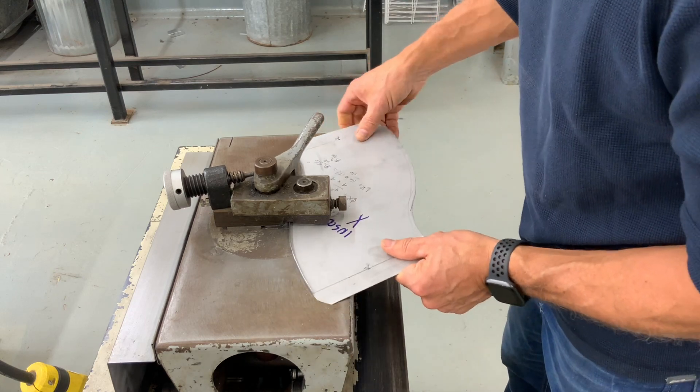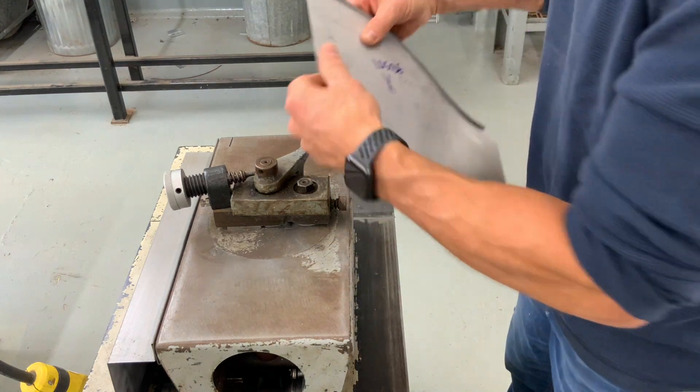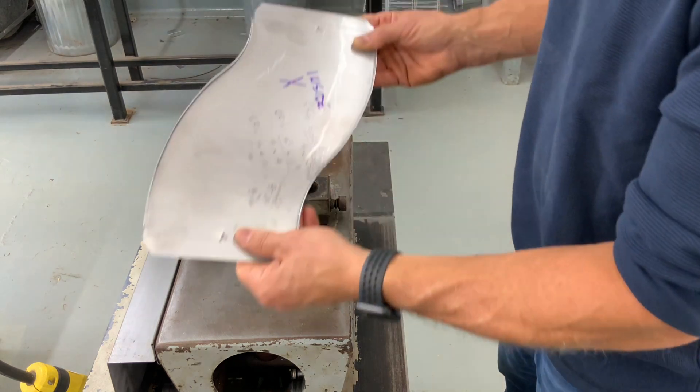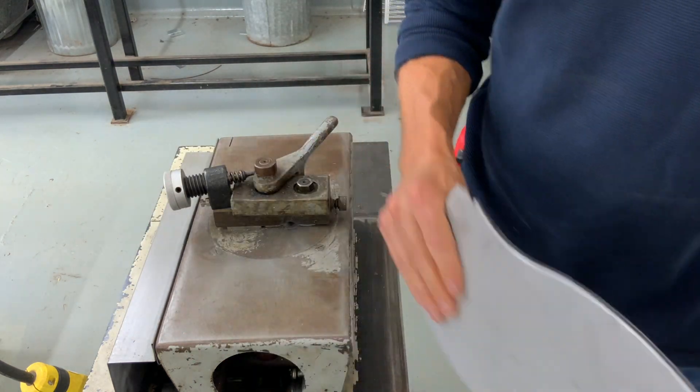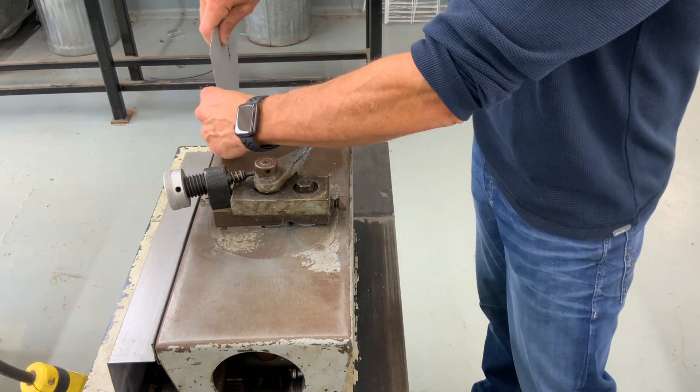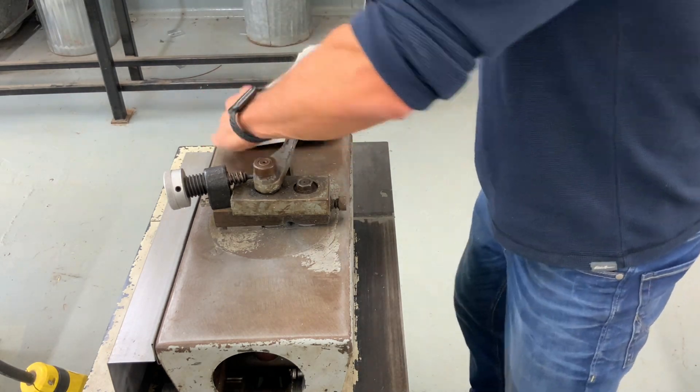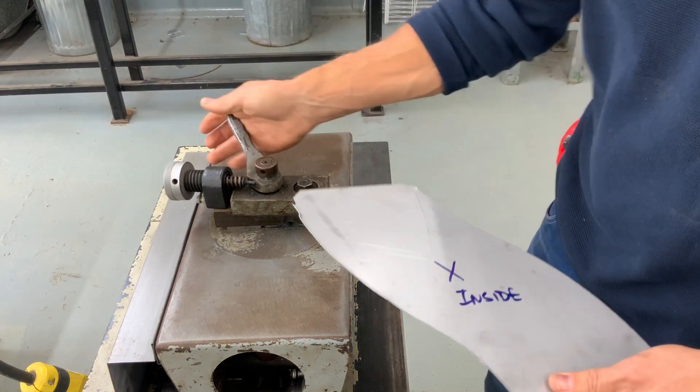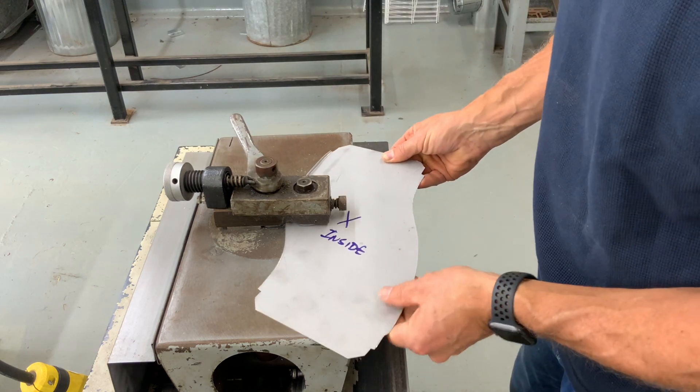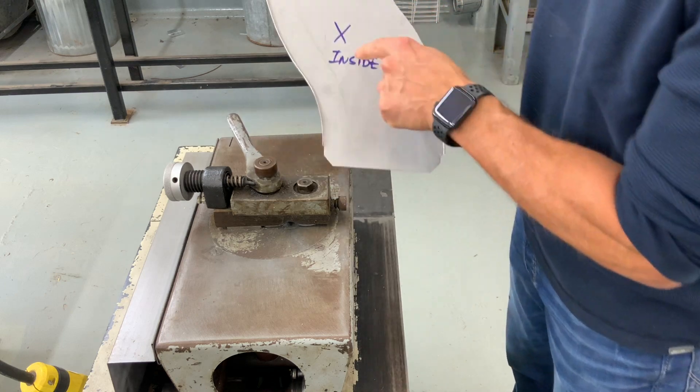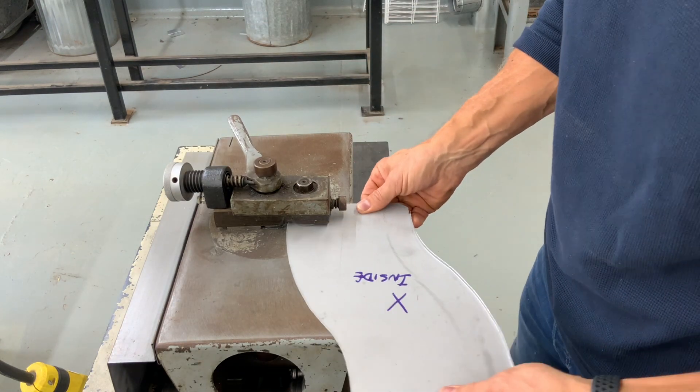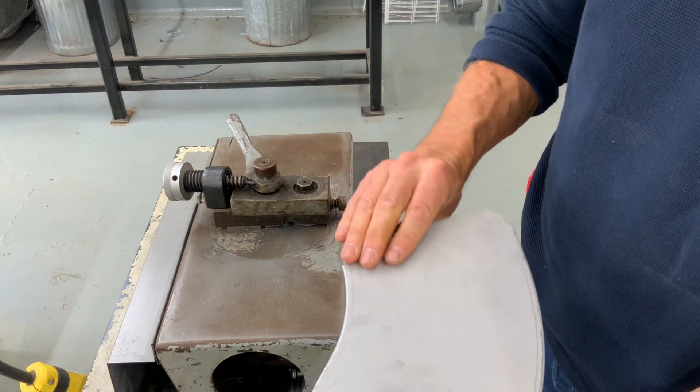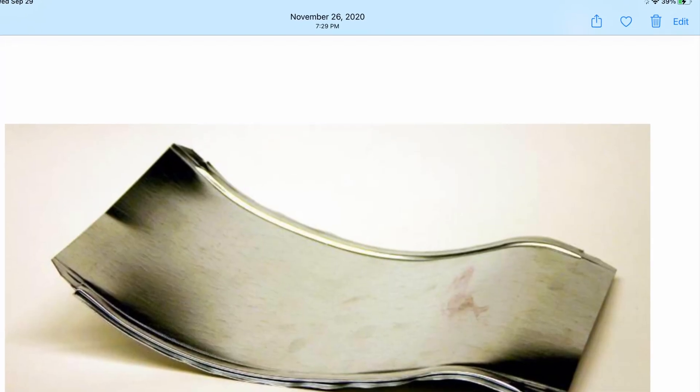But don't worry, run it through without too much pressure another time and it will take out the ripple. Now a second time around, easier, and do the other one in the same manner. Again, hopefully you're noticing that I am looking at the X that I marked on the inside of the pattern. There, the cheeks are complete.